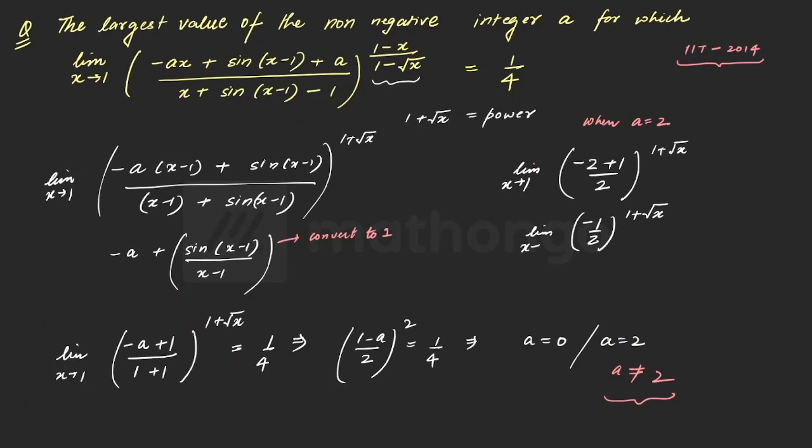Did you find the problem here? What is the problem? Now minus 1 by 2 raised to power 1 plus root x. Now this is where the key difference lies. When we say limit x plus 1 to 1 plus root x it is limiting, right? So we cannot say that it is exactly 2. It is not exactly 2. It is limiting 2.